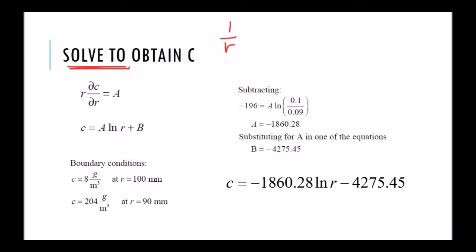So now we are left to simply solve for C. Let's write the equation one last time: d/dR of R dC/dR equal to 0. This drops out because it's equal to 0, so R dC/dR is equal to 0.